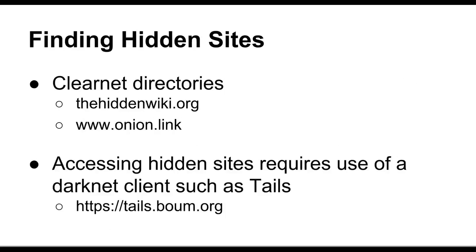There are ways to find hidden sites — there are directories on the clear net, including the Hidden Wiki and onion.link, that provide search engines or listings of different sites. Accessing the sites requires the use of a dark net client such as Tails, which can be downloaded from tails.boum.org. It's especially important that if you choose to access these hidden sites, you do so very carefully — you do not want to use a Windows computer with a poorly configured version of Tor, because of the possibility of stumbling upon a site with malicious content or malware.